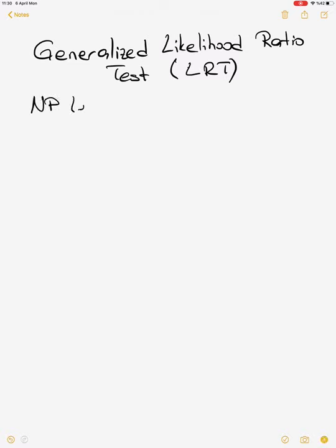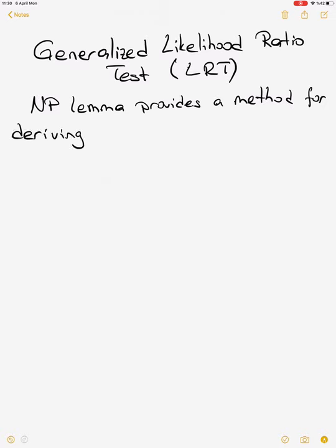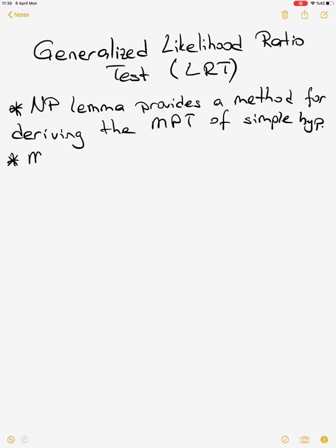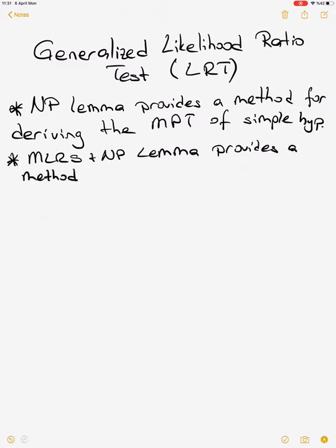If you remember, when we have a simple hypothesis we use the Neyman-Pearson Lemma to define our test — it provides a method for deriving the most powerful test of a simple hypothesis. Then when we have a composite one-sided hypothesis, we combine the monotone likelihood ratio statistic plus the Neyman-Pearson Lemma, and these two provide a method for deriving the uniformly most powerful test for a one-sided composite alternative.